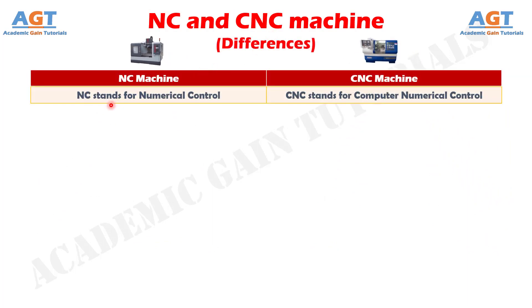Difference number 1. In NC machine, NC stands for Numerical Control, whereas in CNC machine, CNC stands for Computer Numerical Control.